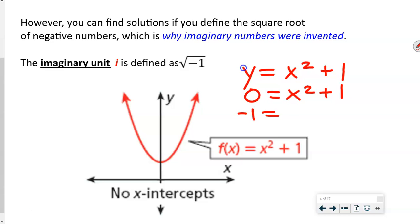So this would be negative 1 equals x squared. If we take the square root of both sides, we get the square root of negative 1. If you put the square root of negative 1 in your calculator, you're going to get an error message. The imaginary number was created to express a problem like this where there are no x-intercepts.